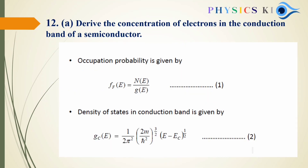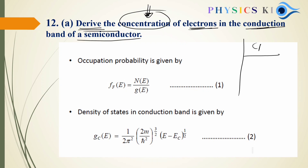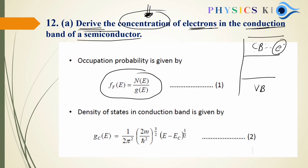Next question: Derive the concentration of electrons in the conduction band of a semiconductor material. This is again a derivation question. We need to find how many electrons are present in the conduction band. We'll derive this using the Fermi level.